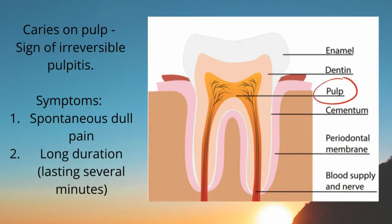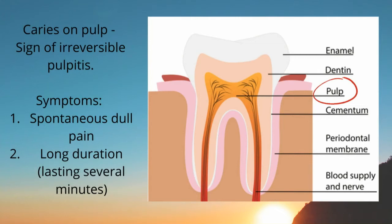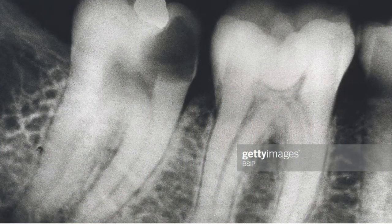If we have caries on the pulp, it will be a sign of irreversible pulpitis, which means that once the pulp is inflamed the only treatment will be either root canal treatment or extraction, depending on whether the tooth is restorable or not. The symptoms the patient would experience are spontaneous dull pain lasting several minutes — the patient will say they have night pain and cannot sleep, describing a very severe, long-lasting pain.